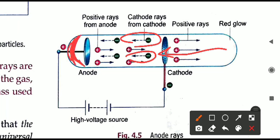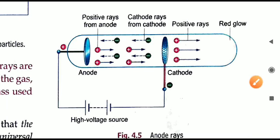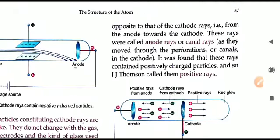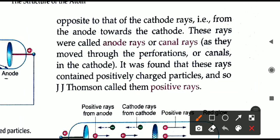Some particles pass through the holes present in the perforated cathode, moving backwards, and they show a red colored glow on the left-hand side of the diagram — on the opposite wall from the anode. Goldstein called these rays anode rays, also called canal rays, because they are moving through the canals or perforations in the cathode.